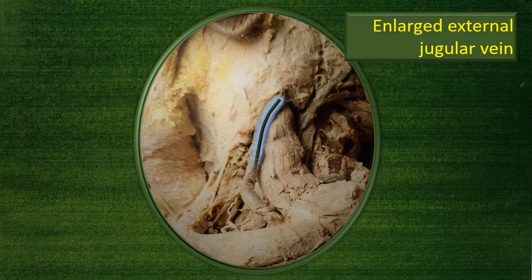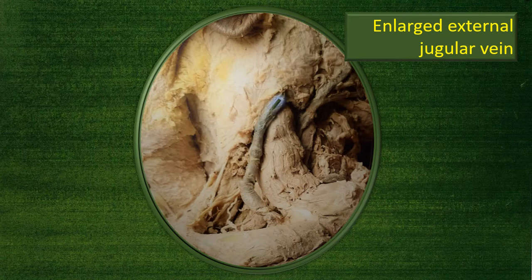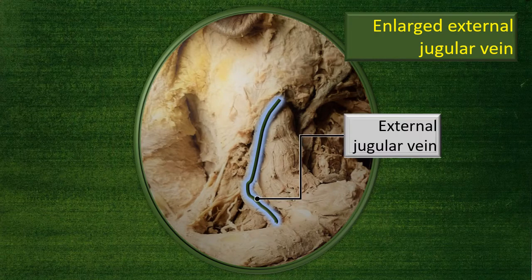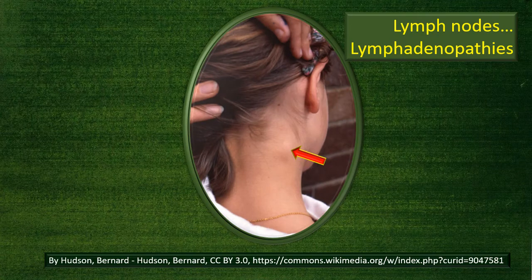That is the enlarged external jugular vein. Next, in addition to all this, it is incomplete if we miss out the lymph nodes of this triangle.